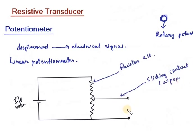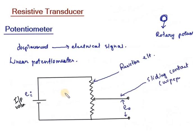Here at this edge we will take the output voltage. Output voltage is represented by EO. The input voltage is EI. Here we call the total length XT — that is, the length of the resistive element is XT. And this sliding displacement is Xi.